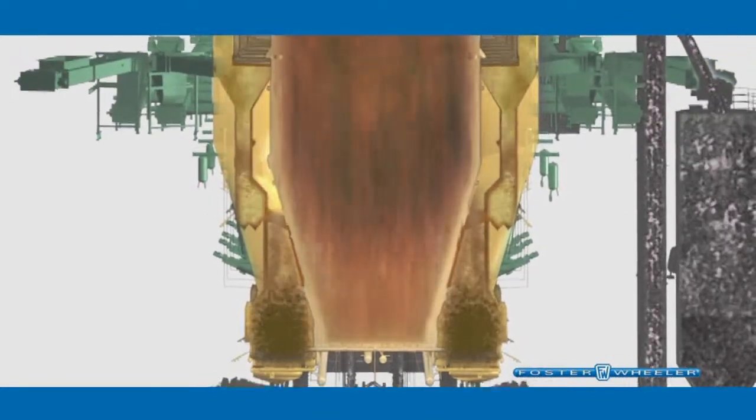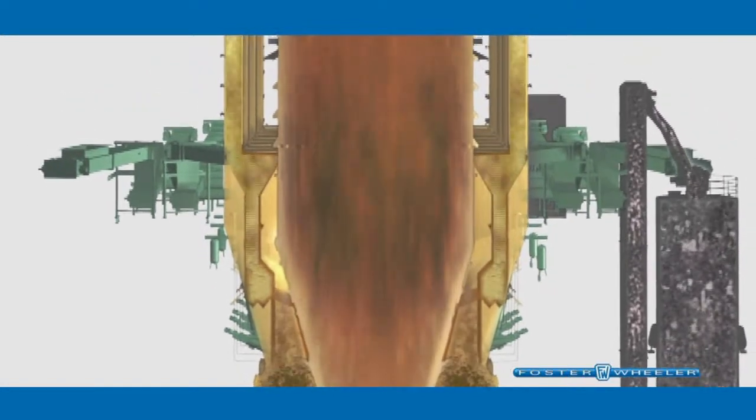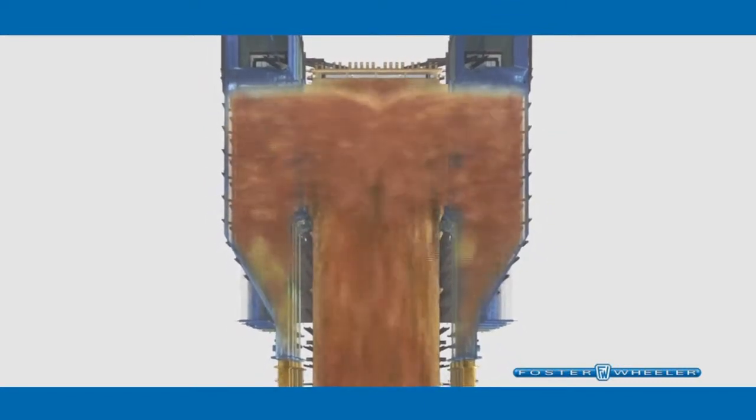The particles eventually reach the top of the furnace and then pass through compact solid separators that capture and return most of them back to the furnace. The compact separators are an advanced design feature of Foster Wheeler's CFB technology, which are made up of steam-cooled panels that are fully integrated with the furnace to form a single monolithic structure.